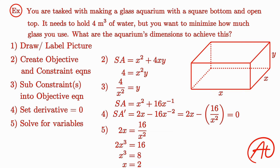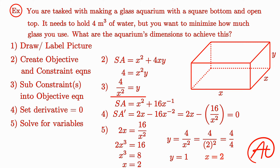Once again, we plug this back into our rearranged constraint equation and find that y is equal to 1. But don't forget your units! Adding those in, we find that x equals 2 meters and y equals 1 meter.